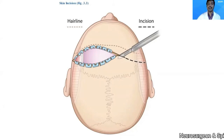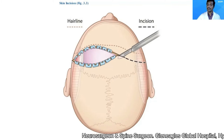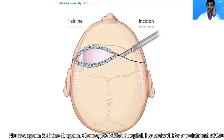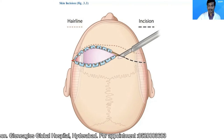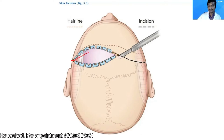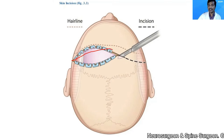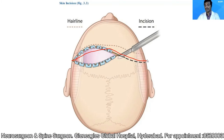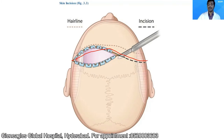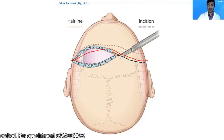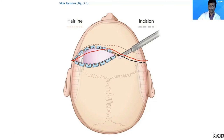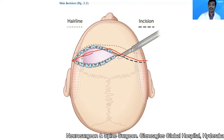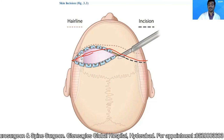We take a bicoronal skin incision. It starts from the zygomatic arch on one side, at least one centimeter in front of the tragus, goes along just behind the hairline to the midline, then mirrors back to the opposite side. I use a number 15 surgical blade to incise the skin down to the level of the pericranium above and below the superior temporal line, and down to the level of the temporalis fascia.